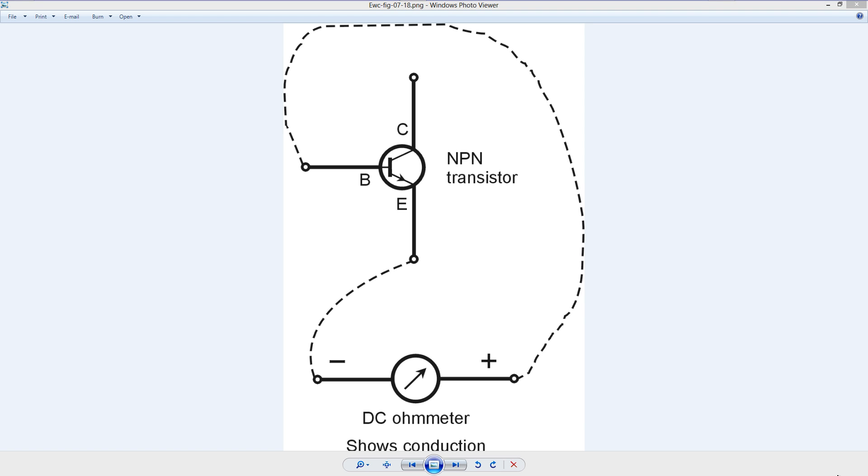Now there are a couple of things about this ohmmeter that you need to know before you try to use your ohmmeter to do these tests. First of all, in the ohmmeter mode it has to produce enough voltage at its test leads to overcome the forward breakover voltage of the PN junctions within the transistor.